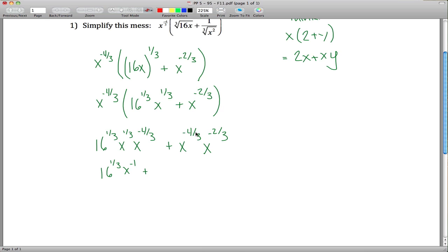And then over here, you've got x to the negative 4 thirds minus 2 thirds. Negative 4 minus 2 is negative 6, so negative 6 thirds, which is the same as x to the negative 2.